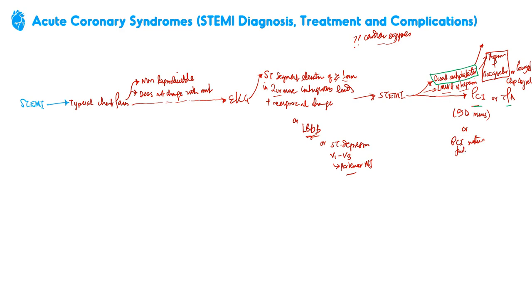Or if you have a PCI facility nearby—assuming you're in a facility that doesn't have PCI capabilities—if you have a PCI facility within 120 minutes, that is still viable. So if you're doing it in your center, 90 minutes is the goal. If you're able to get to that other facility within 120, you expect the PCI to be done within 120 minutes.